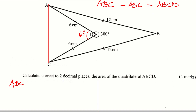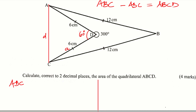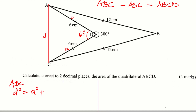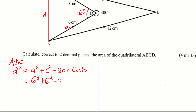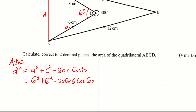So therefore AC — we can denote this side as D, this side as D, this one as side A, and this one as side C. Using the cosine rule: D squared equals A squared plus C squared minus 2AC cosine of D. This is how we are going to get length AC. So therefore, D squared equals 6 squared plus 6 squared minus 2 times 6 times 6 cosine of 60 degrees.